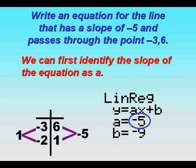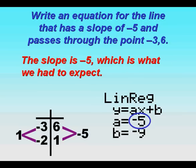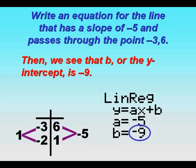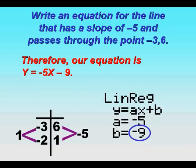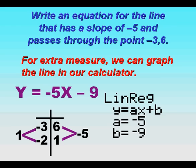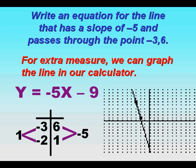We have the slope, the equation A, that's negative 5, our slope, and our y-intercept is negative 9. And so therefore our equation is y equals negative 5x minus 9.